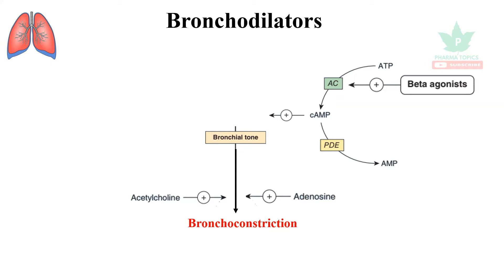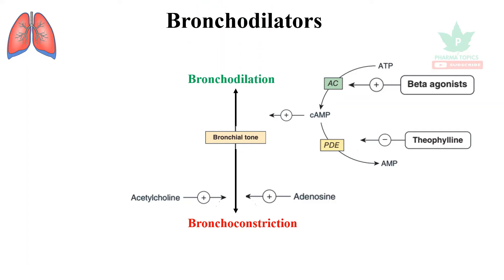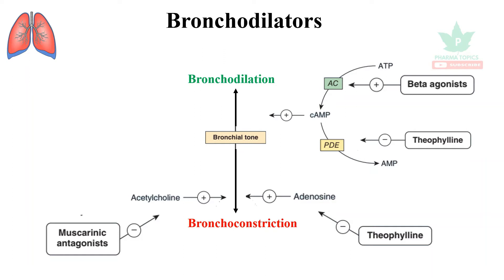Bronchorelaxation can be achieved with beta-2 agonists, which activate adenylyl cyclase and increase cyclic AMP, or through methylxanthines such as theophylline, which inhibit phosphodiesterase and increase the half-life of cyclic AMP. Both of these mechanisms lead to bronchodilation.